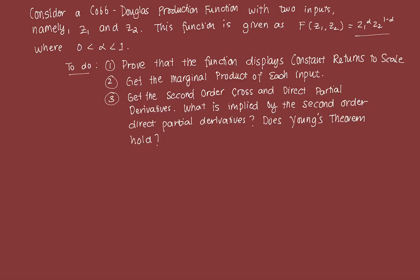What you can notice is that if you add the exponents of Z1 and Z2, it will always equal 1, which is of course a characteristic of a Cobb-Douglas production function.